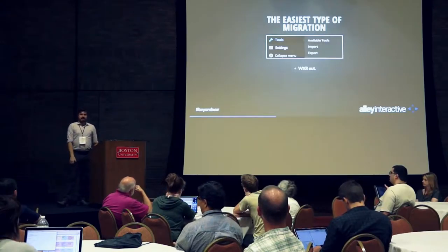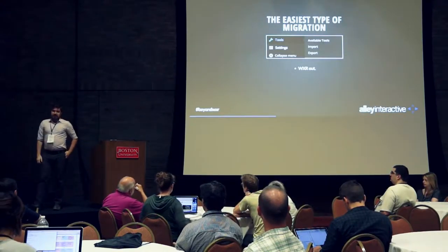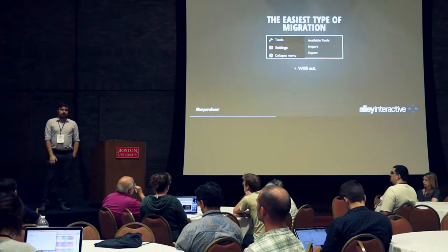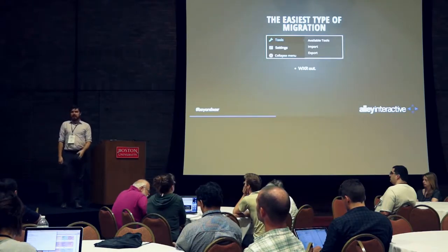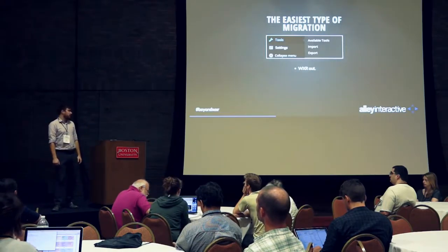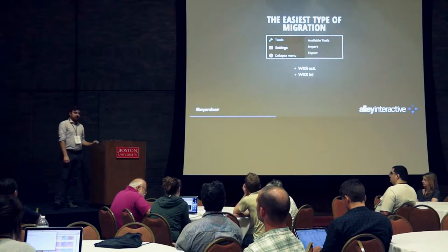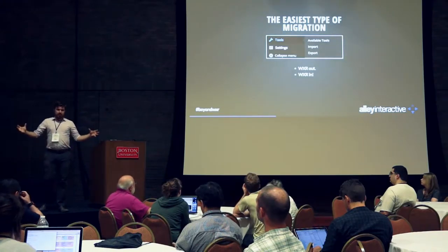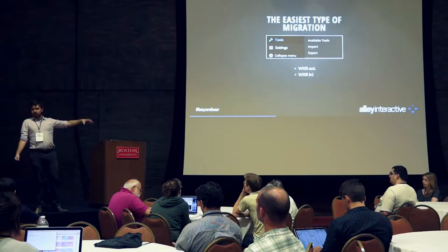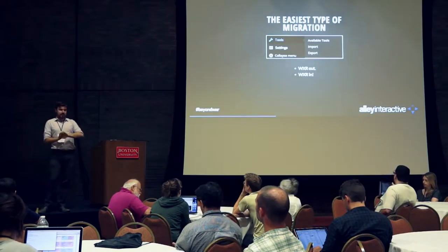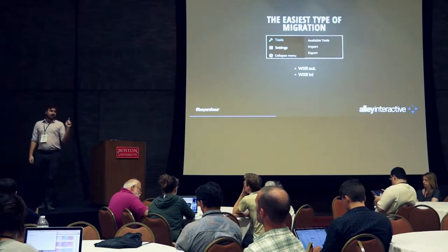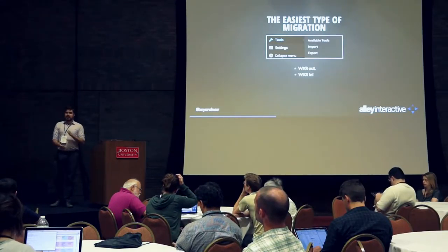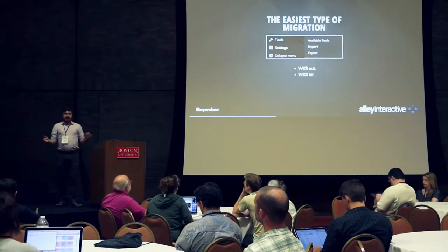WXR is an XML namespace used by WordPress. It's essentially a superset of XML that stores most of the data specific to WordPress. The easiest type of migration is if you had two WordPress sites and could export a WXR file from one, plop it over to the other, and it looks fine to the client. The number of times that's ever happened to me is exactly zero.